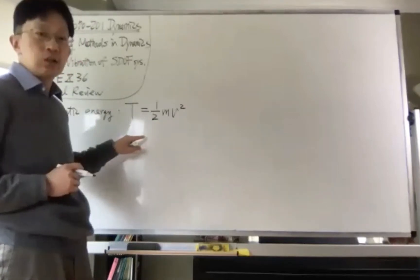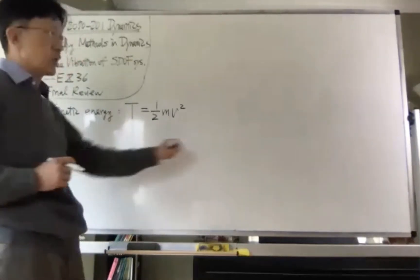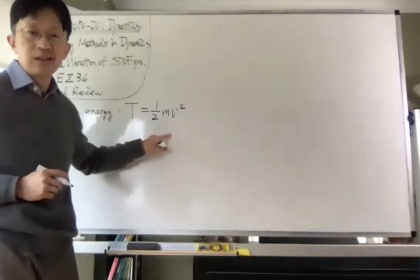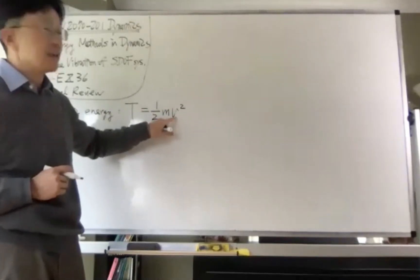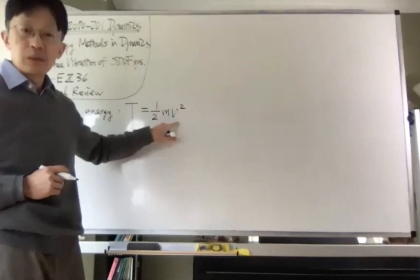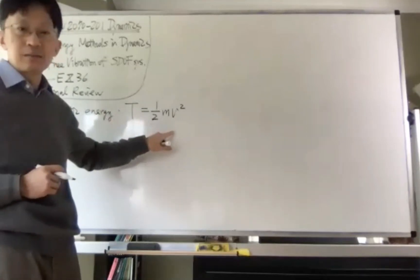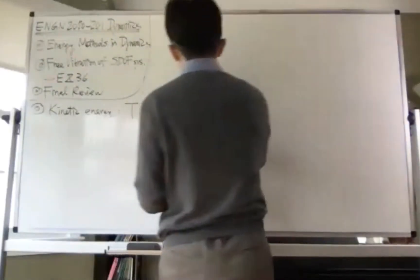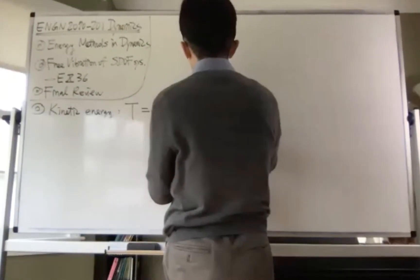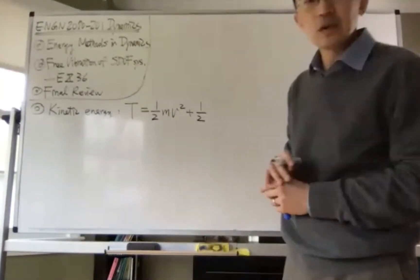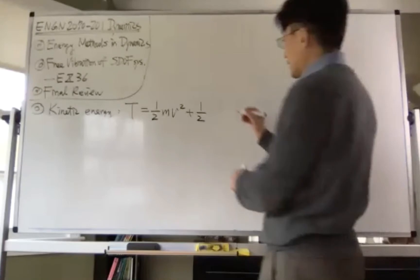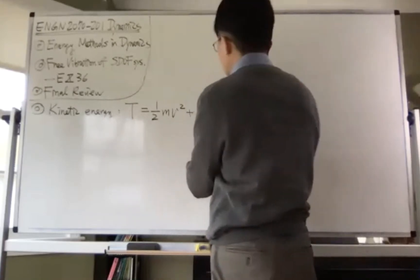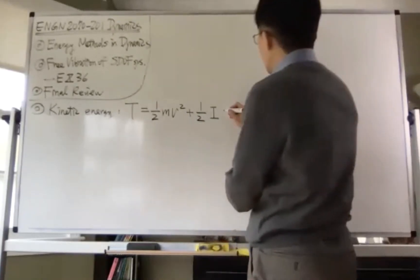Okay, so let's get started with energy methods in dynamics. Again, I will not be able to give you examples because of the time we have in this very last class. However, before I continue, let's recall what kind of energies that we have learned in this dynamics. We have kinetic energy, right? Kinetic energy is denoted by capital T, and capital T equals to one half of the linear component and also the angular component. The linear component is one half of mass times linear velocity. That's why I said it's a linear component squared.